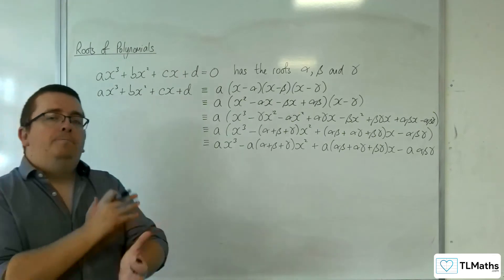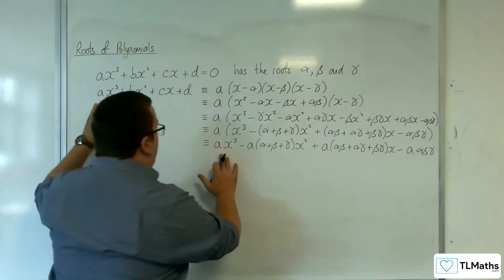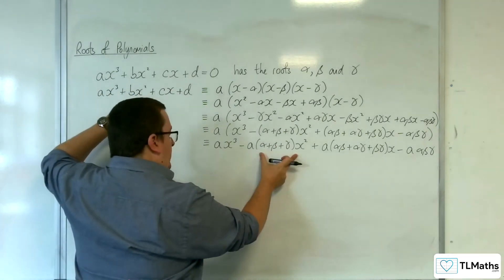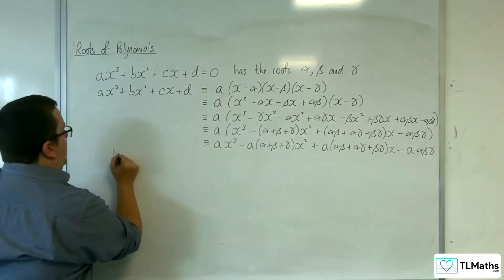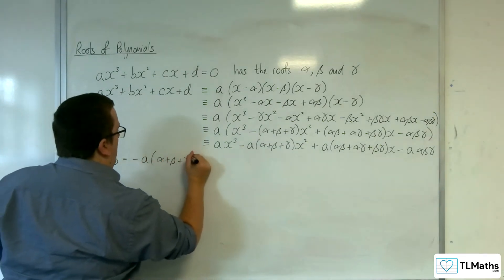The left-hand side has got to be the same as the right-hand side. I've got the x³ and the x³. I've now got bx² equals this. So that means that b must be equal to -a(α + β + γ).